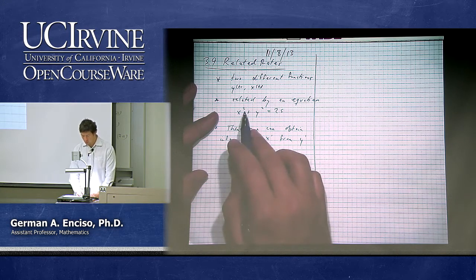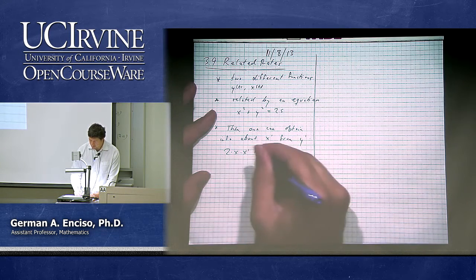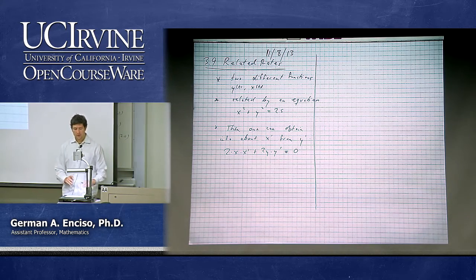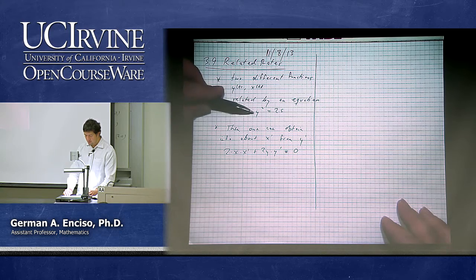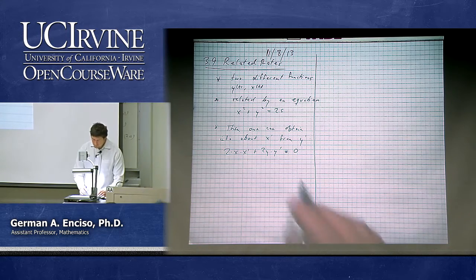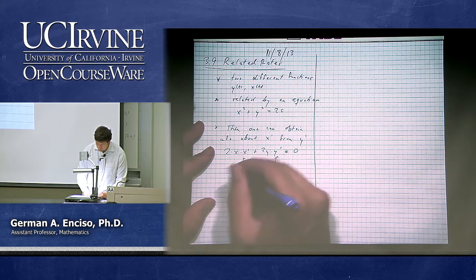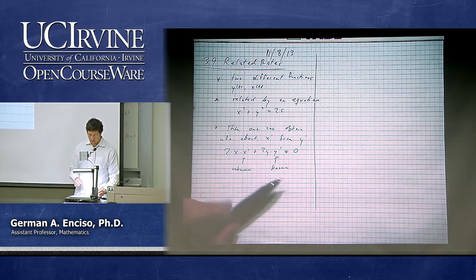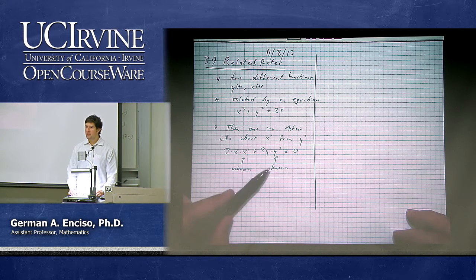So in general, the derivative of x of t squared gives us 2x times x prime plus 2y times y prime, and this is equal to zero. The derivative of the left side is 2x times x prime, the derivative of y squared is 2y times y prime, and the derivative of the right-hand side is zero. So if y prime is known and x prime is unknown, I can figure out x prime from the known information. There are also x and y in this equation, so it's a little more tricky, but this is the main idea.